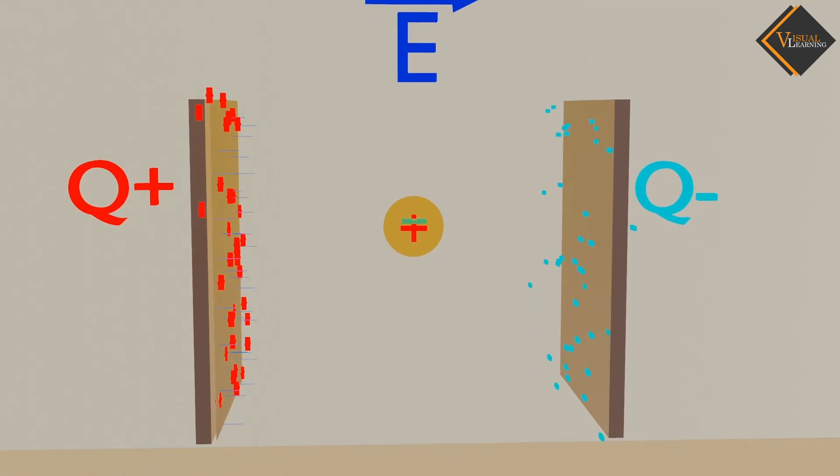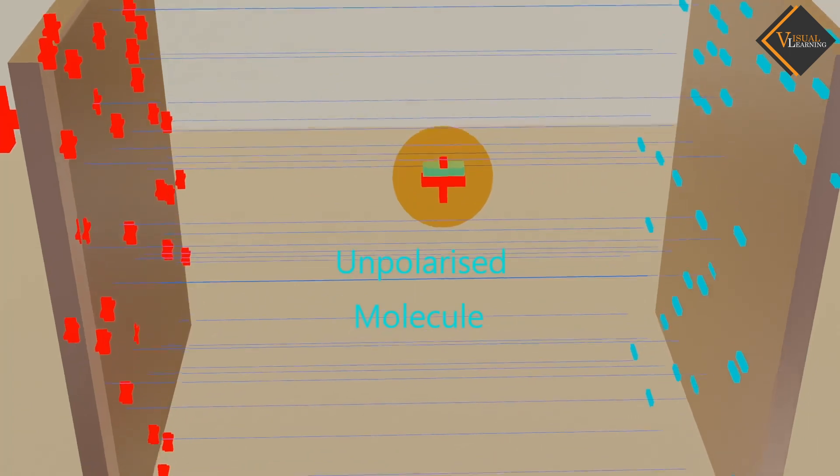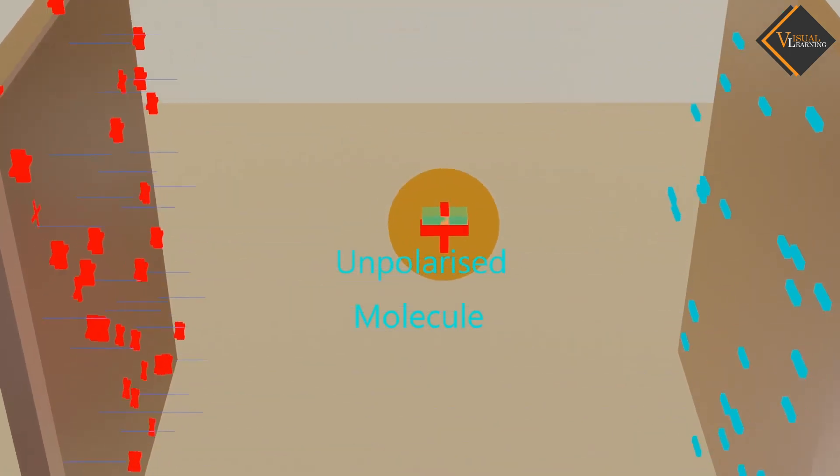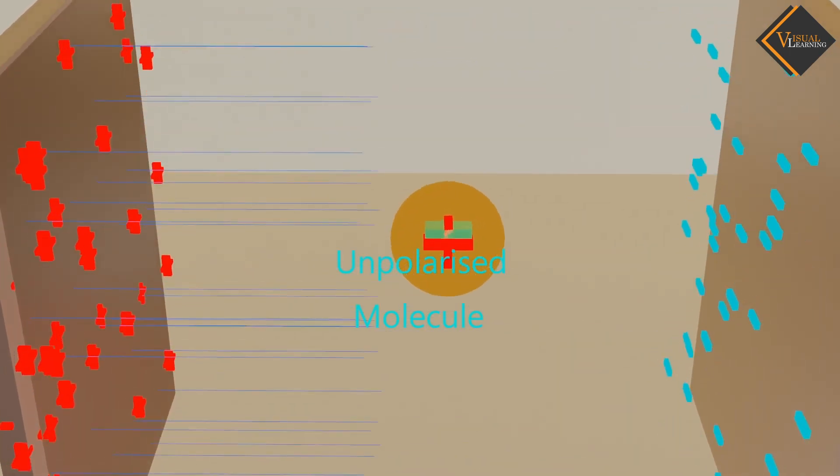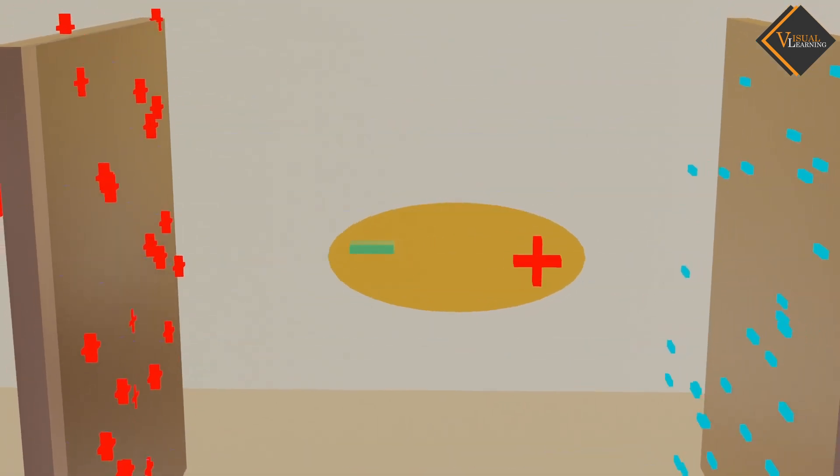In the normal state, the positive and negative parts of the molecules overlap each other. However, during polarization, they separate and the molecules are then referred to as dipoles.